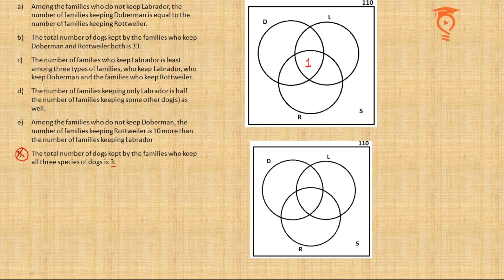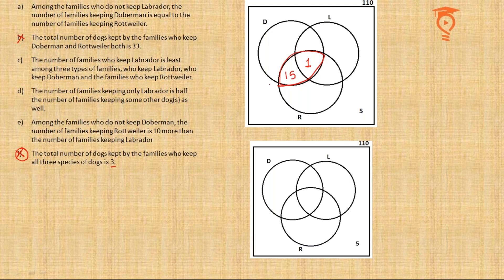Moving to point B: the total number of dogs kept by families who keep both Doberman and Rottweiler is 33. The area for Doberman and Rottweiler (excluding the all-three intersection) accounts for 30 remaining dogs. Since families in this region each keep two dogs, there are 15 families to be written here.